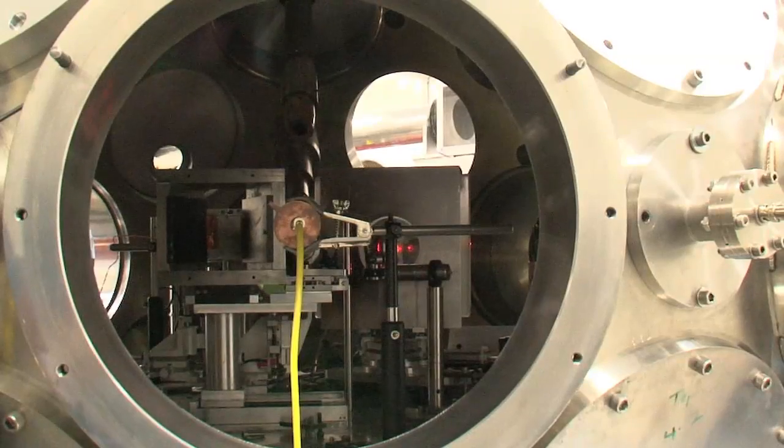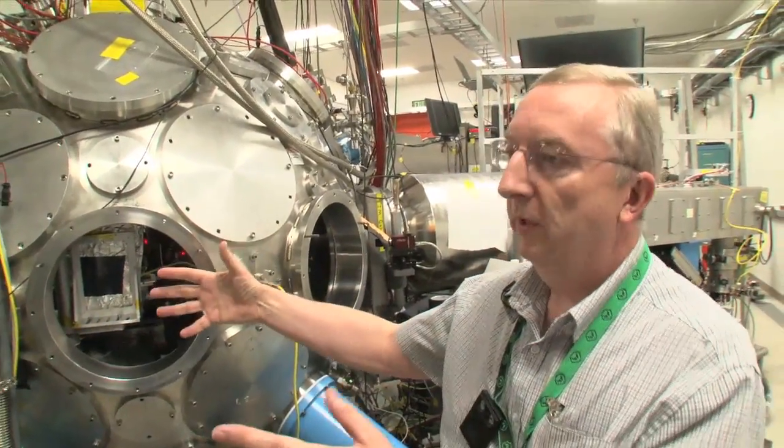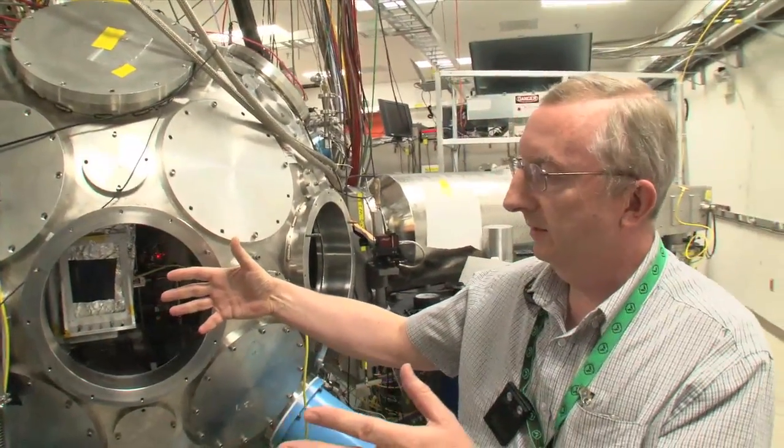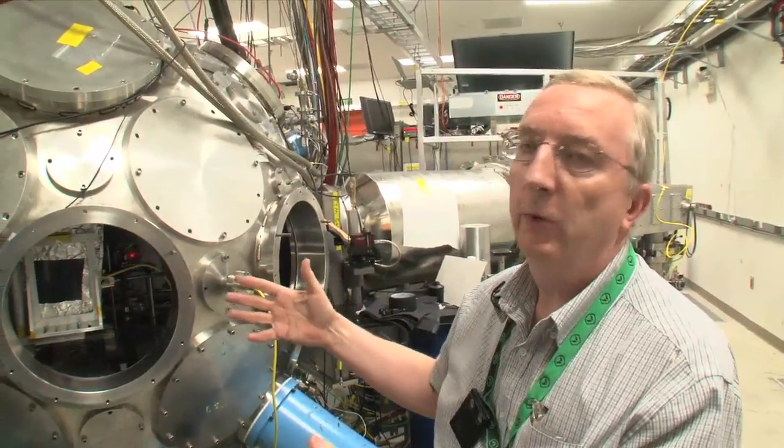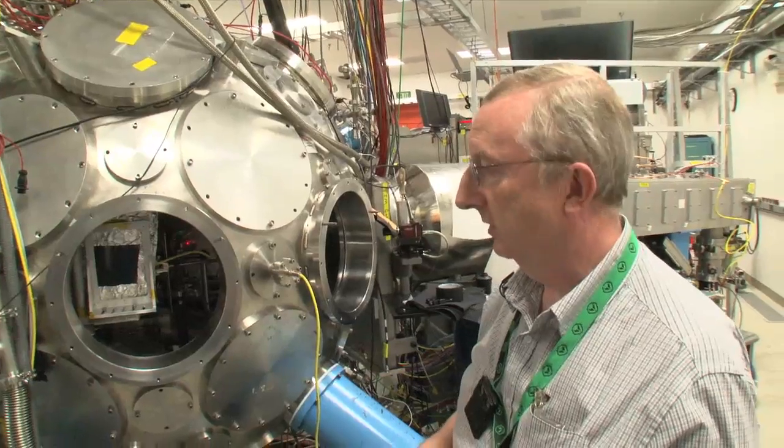So this is the Trident North target chamber. We have our neutron detectors arranged around this area, some with the uranium target inside and some empty. And so we can measure the signal-to-background ratio of the interrogated neutrons. The experiment went very well.